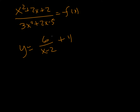Asymptotes are going to be wherever either x or y cannot equal 0. So right here, x cannot equal 2 because that would create division by 0. And so we have a vertical asymptote at x equals 2.